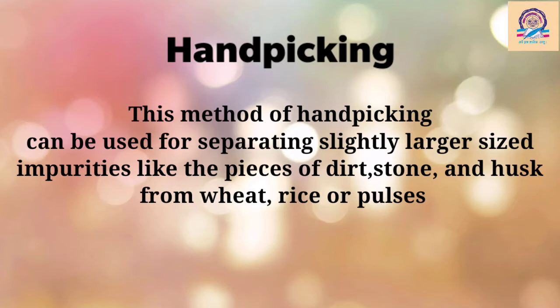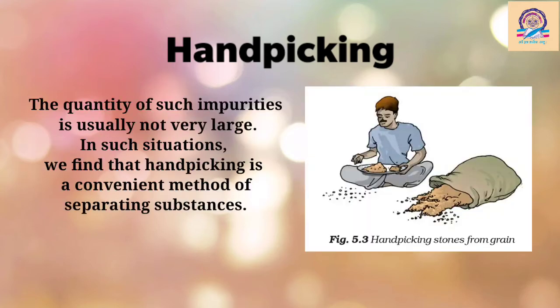Now let's see where this method of handpicking can be used. This method can be used for separating larger-size impurities like pieces of dirt, stone, and husk from wheat, rice, or pulses. Husk is nothing but the outer covering of a seed — the cover of the seed. In simple words, when the size of impurities is large and the quantity of impurities is not large, then this method is very convenient.